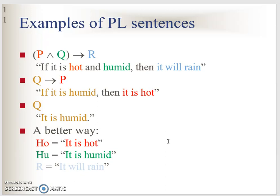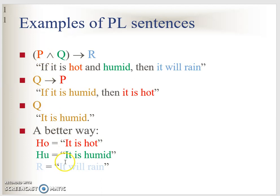As an example of a PL sentence: P is 'it is hot', Q is 'it is humid', and R is 'it will rain'. Combining these: P AND Q implies R means 'if it is hot and it is humid, then it will rain'. You can also represent the symbols with more descriptive names — for example, HO for hot, HU for humid, and RAIN for rain — just like variables, to help you remember more easily.